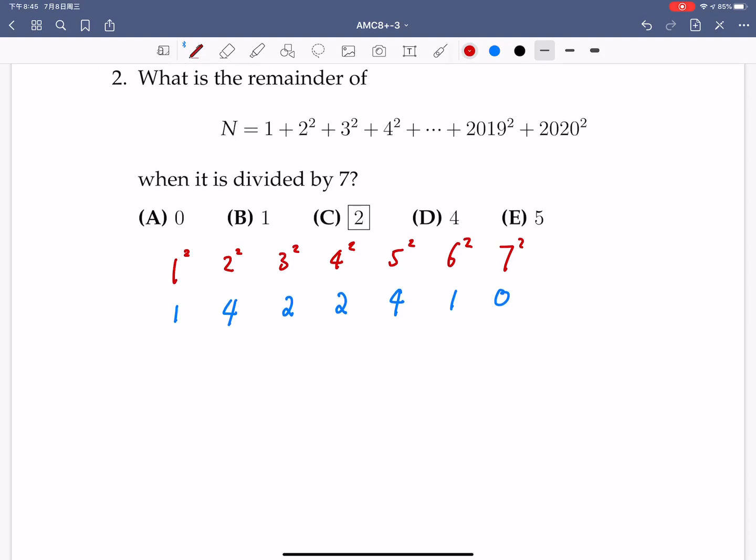So the key observation is, starting from the eighth term, starting from the next seven terms, so the remainder repeats itself. So the remainder will also be 1, 4, 2, 2, 4, 1, 0.